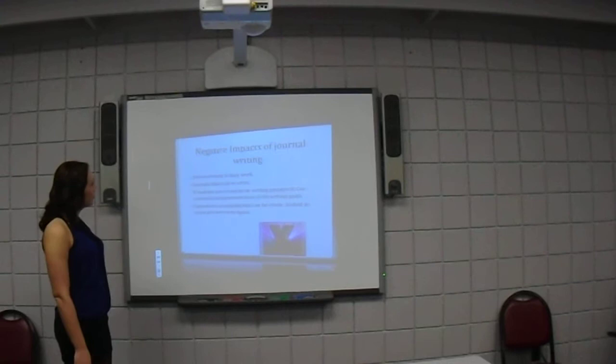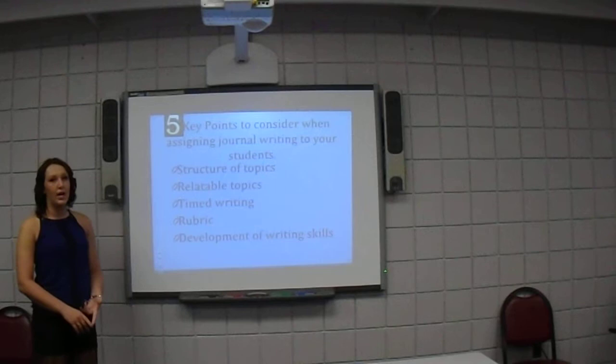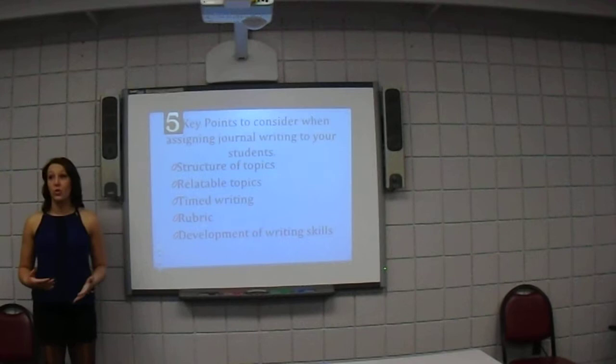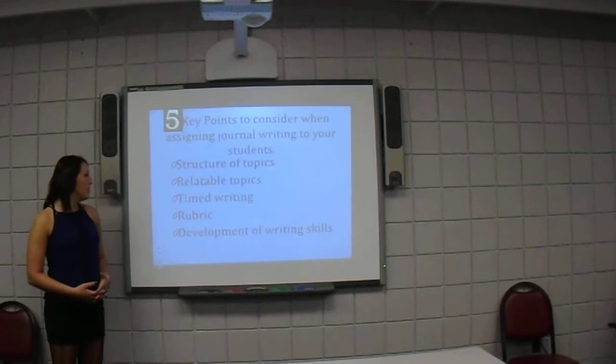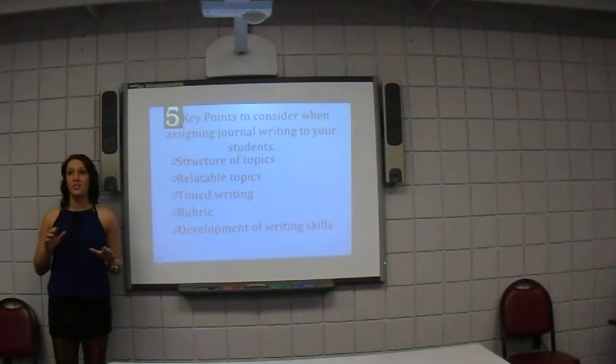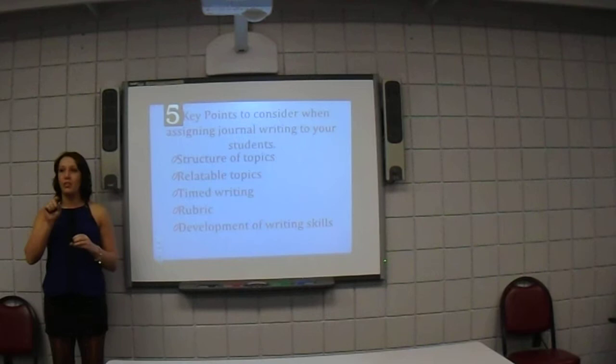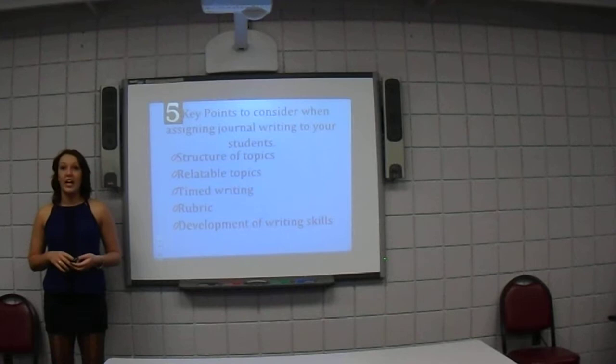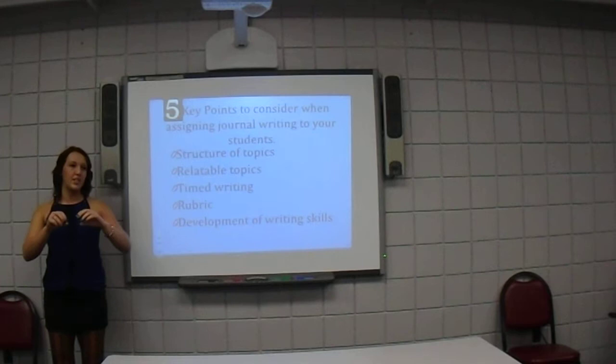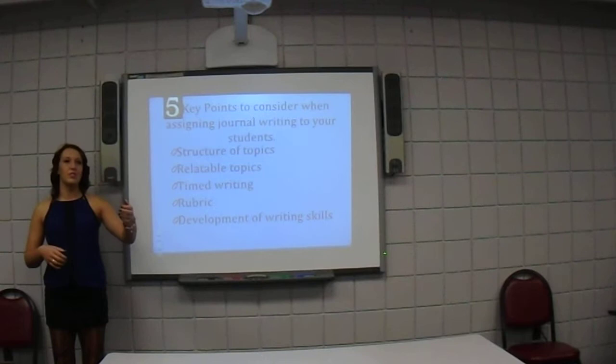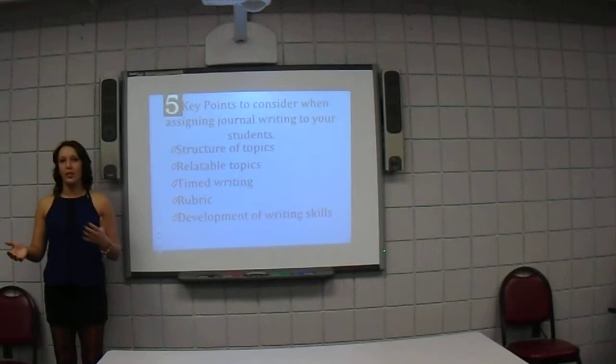Five key points to consider when assigning journal writing: the structure of topics — are they relatable? Is it something that can be done in a short period of time, because you don't want to spend 20 minutes of class on it. Make sure you have a rubric. The articles said the best way is to put a little paper in the journal with check boxes students fill out each time — covering sentence structure, whether they addressed the topic properly, and thinking in depth rather than just giving a general answer.